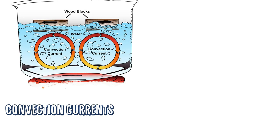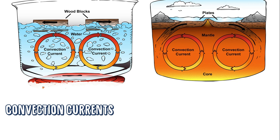Convection currents: scientists think that heat from the earth's core causes circular movement in the mantle called convection currents, which slowly move the plates that float on top of the mantle. Think of it like a pot of boiling water — the earth's core is the stove-top burner and the mantle is the boiling water. As the water near the burner heats up, it becomes less dense and rises. When it reaches the top, it cools off, becomes denser, and sinks back down. This is called a convection current, and a similar process drives the mantle and moves the plates — that movement is called plate tectonics.